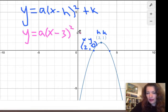And our k value is plus 1. So just writing in the vertex, we have that y equals some a value times x minus 3 squared plus 1.